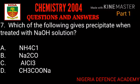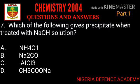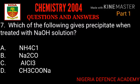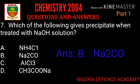The next question: which of the following gives a precipitate when treated with sodium hydroxide solution? Option A: ammonium chloride. Option B: sodium carbonate. Option C: aluminium chloride. Option D: ethanoic acid. Option B is the right answer — sodium carbonate.